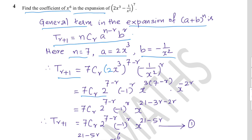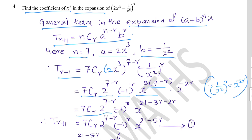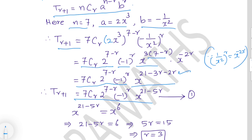Collecting constants: 7Cr · 2^(7−r) · (−1)^r. For x terms: (x³)^(7−r) = x^(3(7−r)) = x^(21−3r), and (1/x²)^r = x^(−2r). Adding indices: x^(21−3r) · x^(−2r) = x^(21−5r). So equation 1 is: T(r+1) = 7Cr · 2^(7−r) · (−1)^r · x^(21−5r).